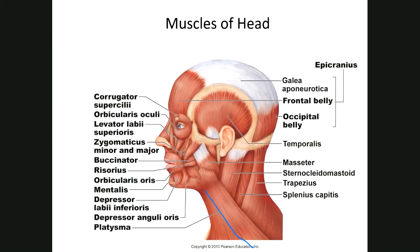The orbicularis oculi surrounds the eye and makes eye movement. This is the orbicularis oris — make a kiss sound and you'll hear that you're using the orbicularis oris during that sound-making procedure.